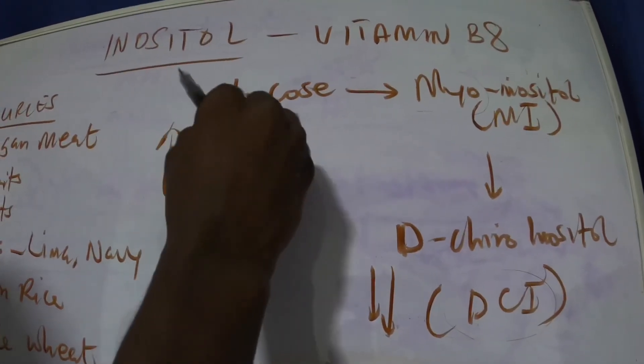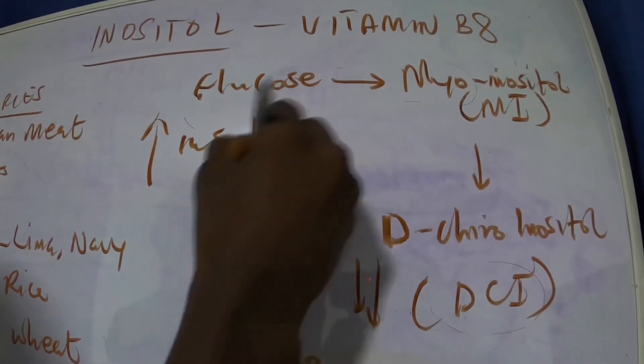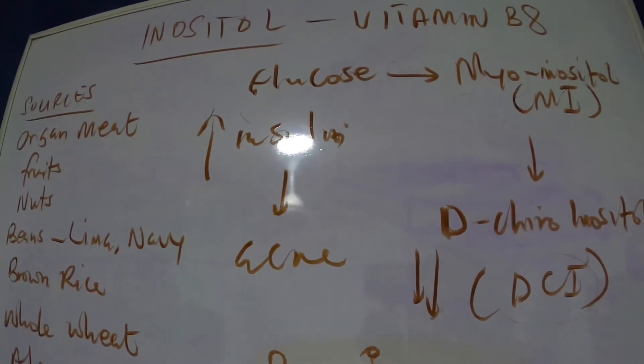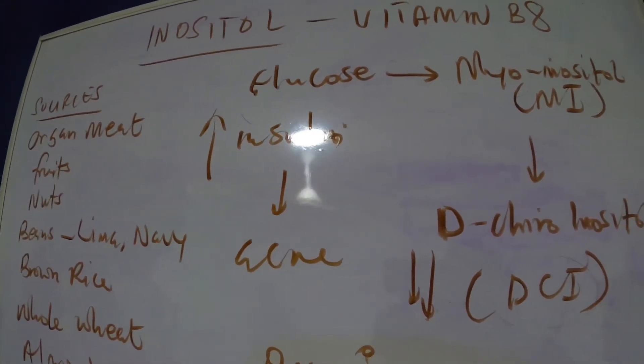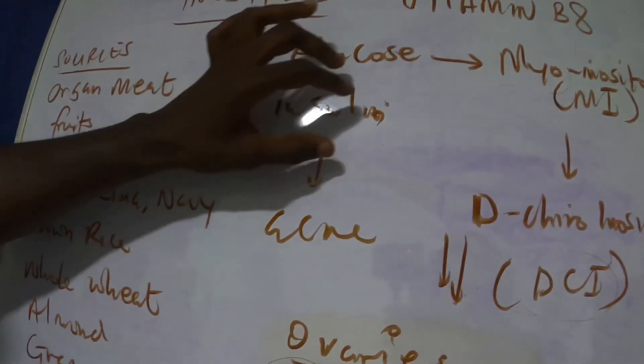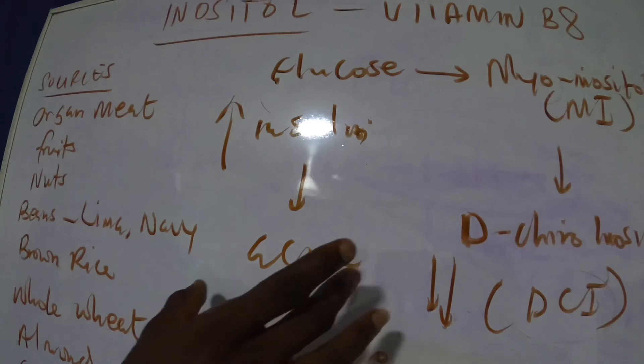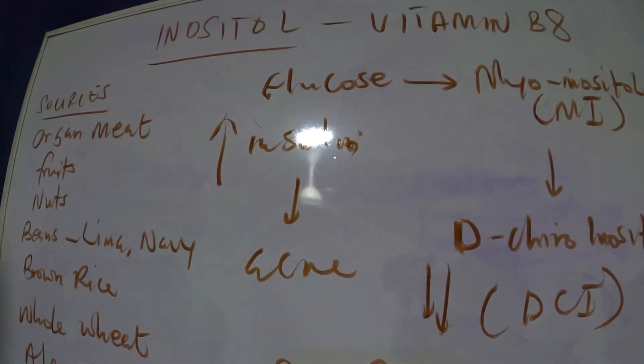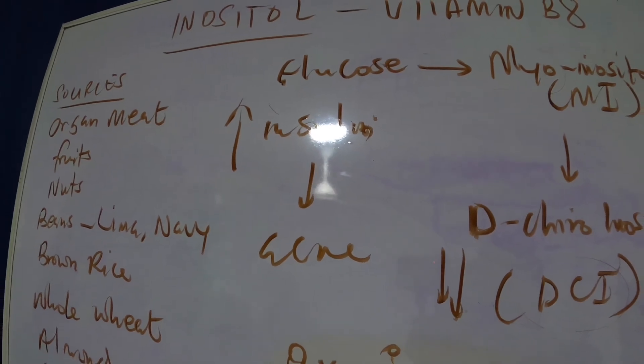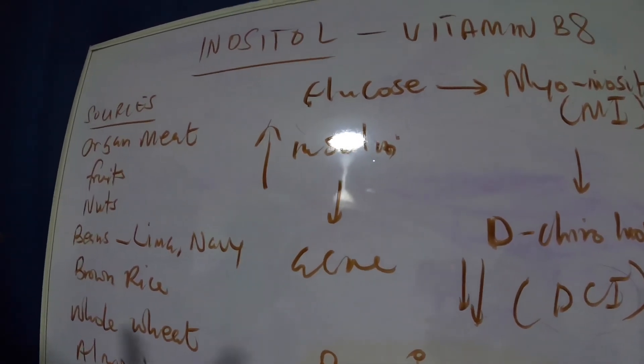The higher levels of insulin is responsible for acne in people with PCOS. So if inositol is able to help us combat this insulin resistance, we are certain that the acne in people with PCOS is going to be resolved.